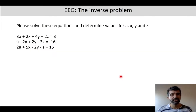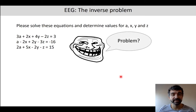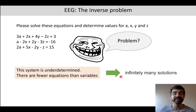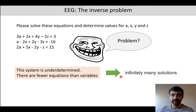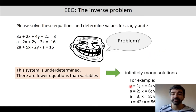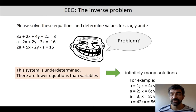Let's get back to the equation system I gave you earlier. I would be surprised if any of you could solve it, because actually it is not solvable — the system is underdetermined. This means there are fewer equations than variables. You can solve the equation system, but there is an infinite number of solutions. For example, A equals one, X equals four, Y equals minus three, and Z equals one works, but that's not the only solution. There is an infinite number of solutions — for example, 42, 86, 38, and 124 as well.